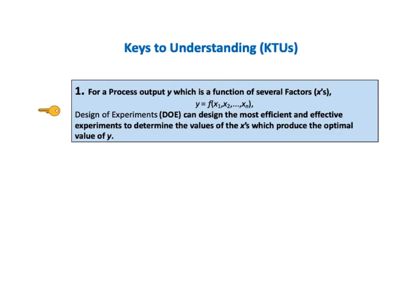For this video there are only 5 Keys to Understanding. The first KTU says: for a process output y, which is a function of several factors x's — that is, for y equals f of x1, x2, ... xn — design of experiments, DOE, can design the most efficient and effective experiments to determine the values of the x's which produce the optimal value of y.